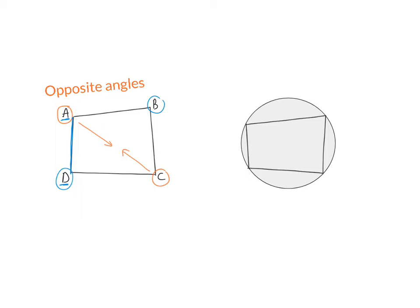The next important definition is a cyclic quadrilateral. A cyclic quadrilateral is a quadrilateral with all four of its angles on the circumference of a circle. And then lastly, supplementary angles are two angles that add up to 180 degrees.